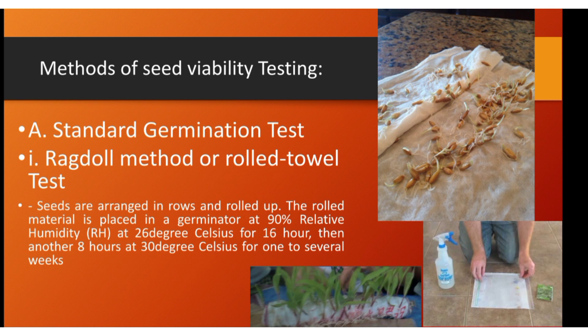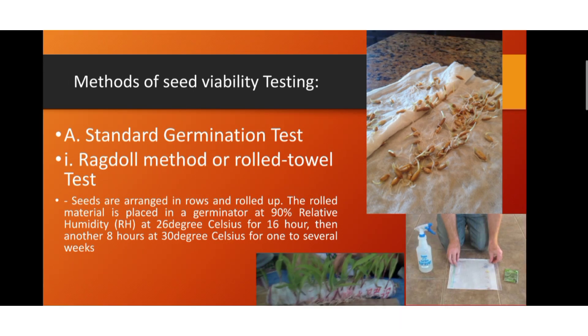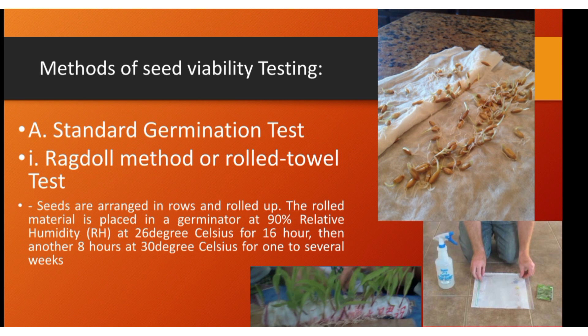Roll it down and tie the sides of the towel. Arrange the seeds on the towel, sprinkle with water, then roll it up. After a few days, a radicle will sprout and you can open the rolled towel to determine how many seeds have germinated.